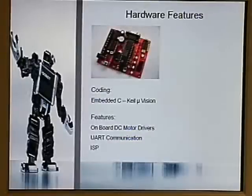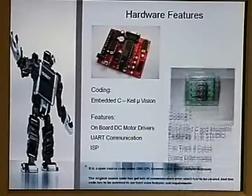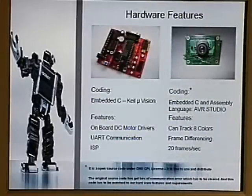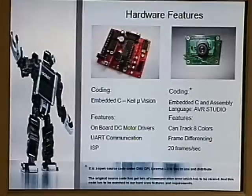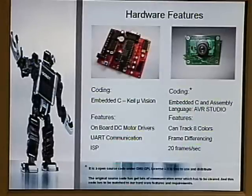The hardware features: the brain of the microcontroller has coding done in Embedded C with onboard DC motor drivers, UART communication, and ISP. For the camera, coding is done in Embedded C and assembly language in AVR Studio. It is open source code under GNU GPL license, free to use and distribute — we used and modified it. Its features include tracking eight colors and frame differencing at 20 frames per second.